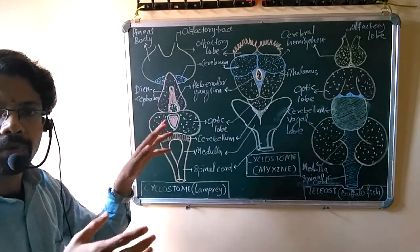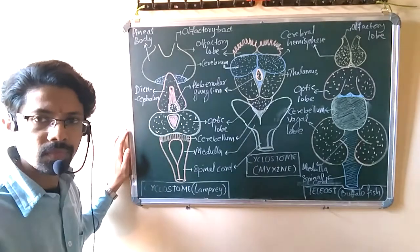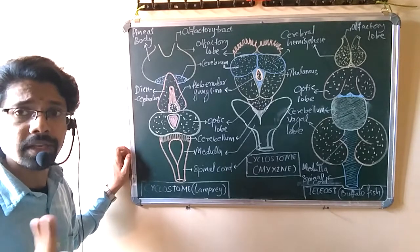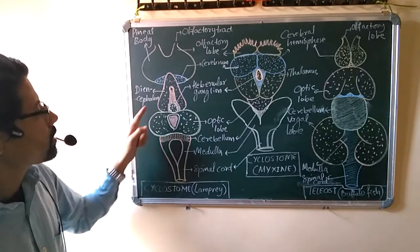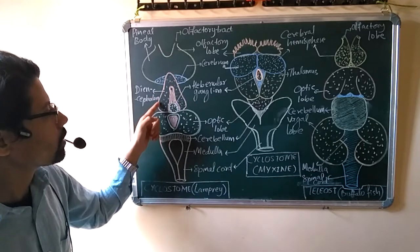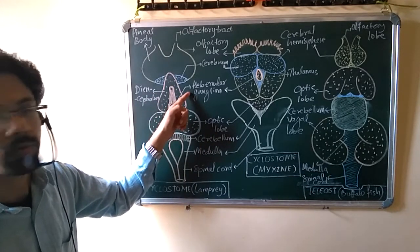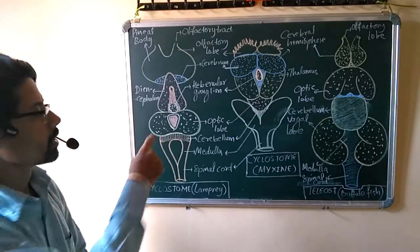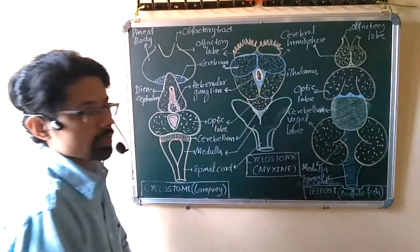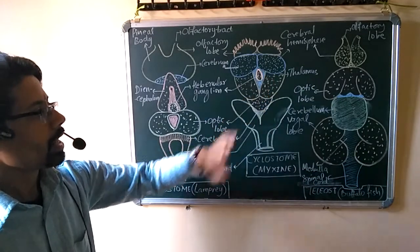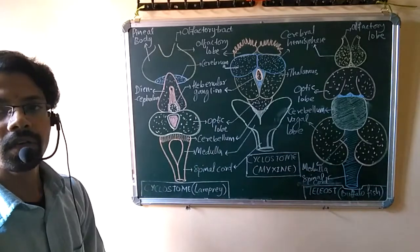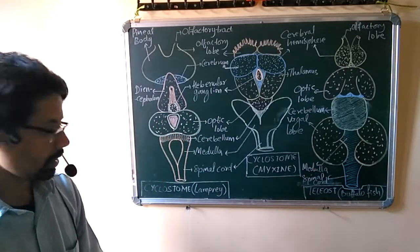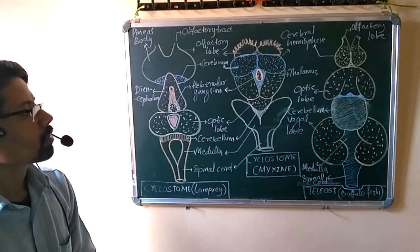Myxine is also a member of cyclostomata and is commonly called hagfish. Lamprey is its own group with the scientific name Petromyzon. In lamprey, the diencephalon part is very large, containing a structure called the habenular ganglion. The habenular ganglion is also present in myxine, but the diencephalon is reduced there. Here the diencephalon is quite bigger; there it is quite shrunken. In myxine, thalamus development takes place — thalamus is shorter in lamprey but larger in myxine. As for optic lobes, they are largely developed in Petromyzon, whereas in myxine the optic lobe is single and somewhat small.